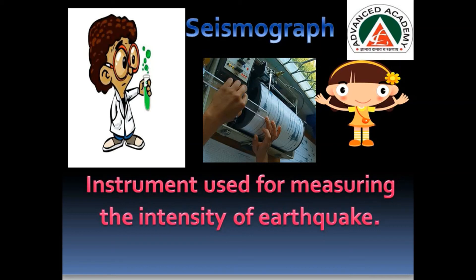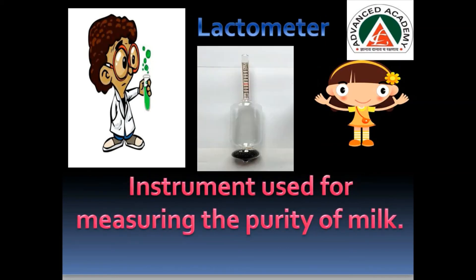The next instrument uncle showed Pihu was a lactometer. He told her, 'Pihu, this is the instrument used for measuring the purity of milk.' Pihu got excited — she didn't know the purity of milk was also checked. Uncle explained, 'Yes, because if the milk that comes to your house is unsafe, then we have a problem. So the purity of milk should also be checked.'